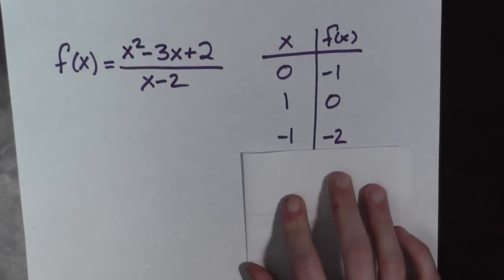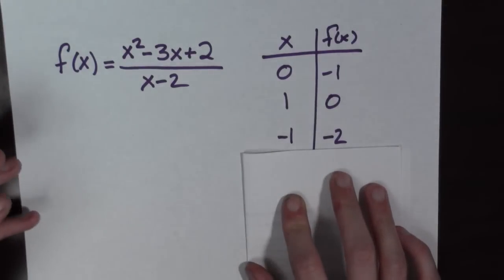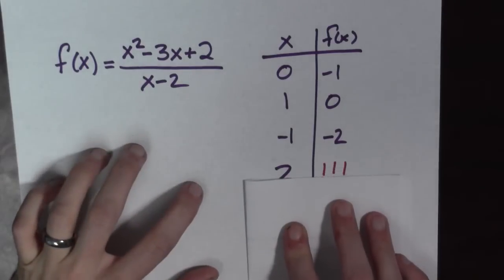Now, let's plug in negative one. So, we plug in negative one and we get negative two out. That's the next easiest.